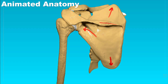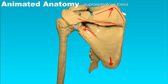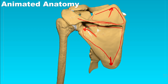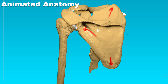What you can see here is the spine of the scapula. The area above it is called the supraspinatus fossa, while the area below it is called the infraspinatus fossa. This is where the muscles originate that are called the supraspinatus and the infraspinatus muscle.